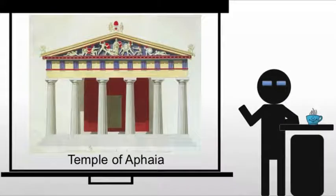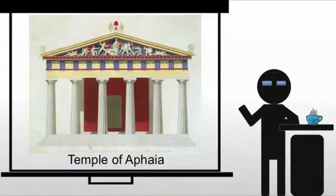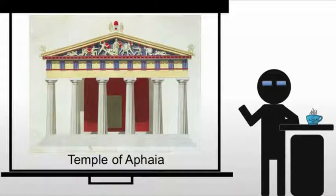The piece we're looking at is the Temple of Aphaia, and this is built between 500 and 490 BCE, give or take. It's important because we see these changes taking place on the same temple. This temple is dedicated to a local goddess by the name of Aphaia, and it is a much more compact structure than the Temple of Hera 1.